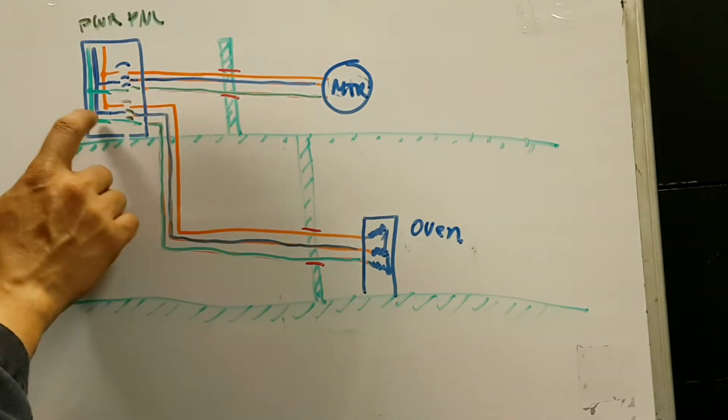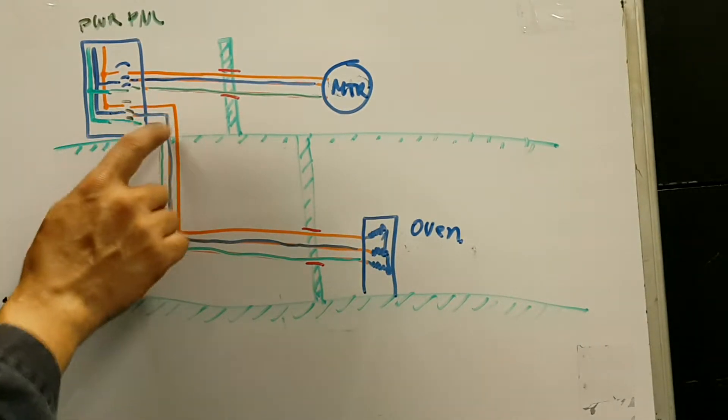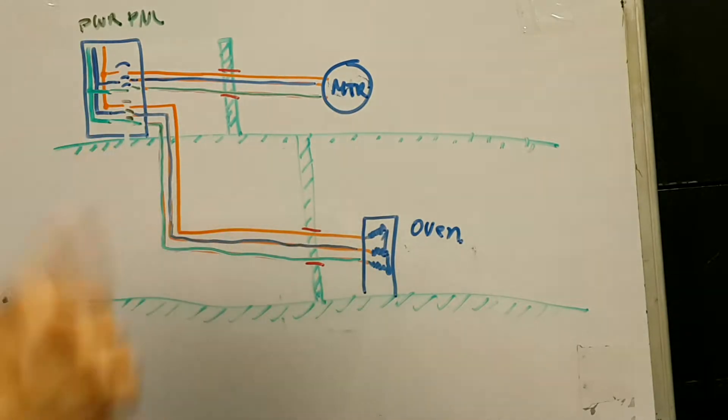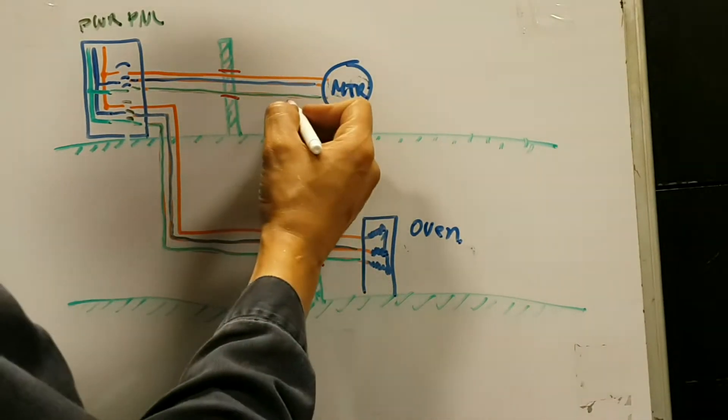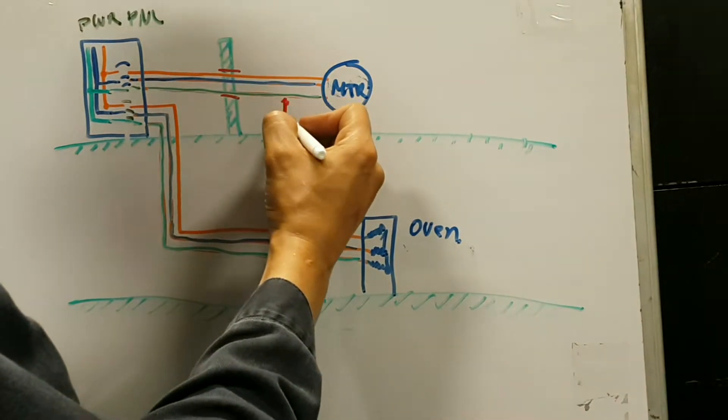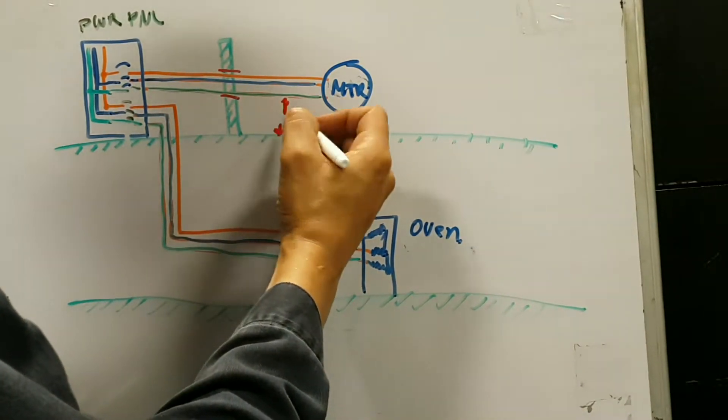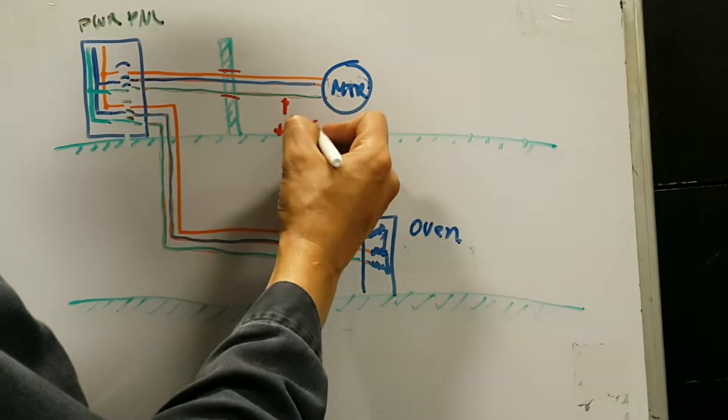Same thing, when I close the breaker over here, I get power to the oven. If I take a multimeter and I read the power between that lead and the ship's ground, I will get 220 volts.